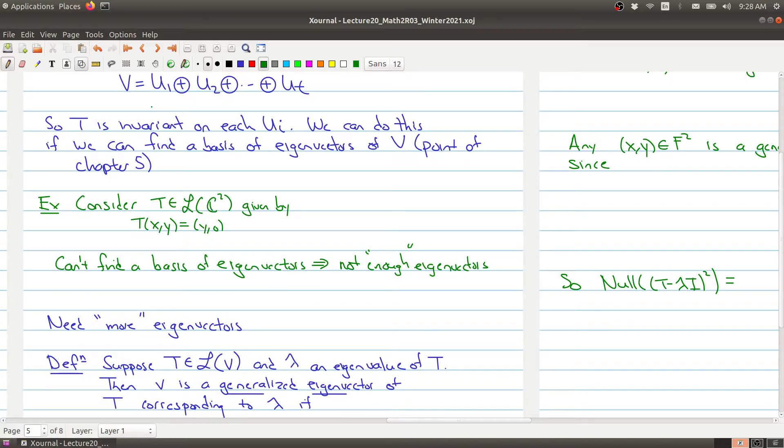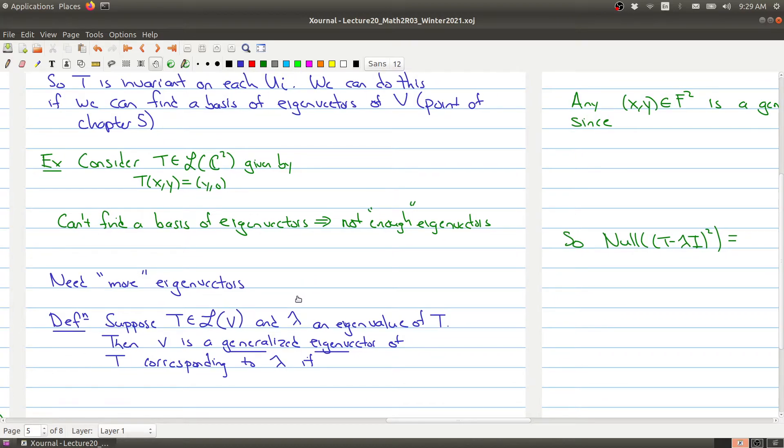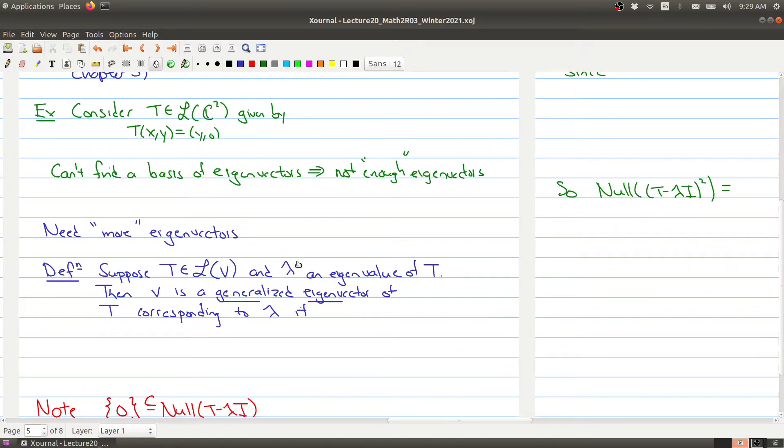We could build things nicely if we had enough eigenvectors. So what we need is somehow we're lacking eigenvectors - we need more eigenvectors. Where could we find these eigenvectors?